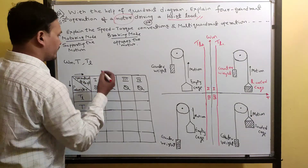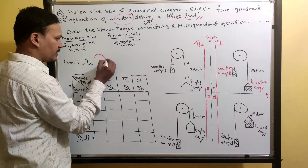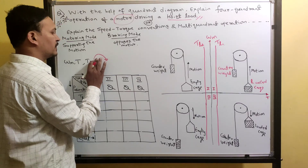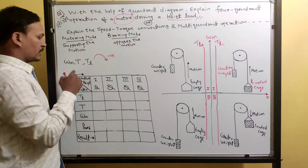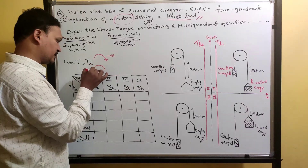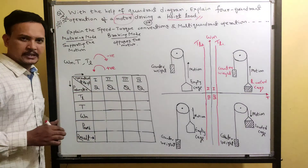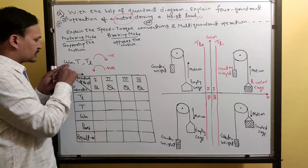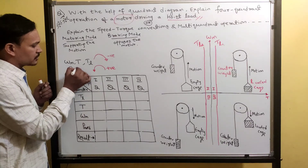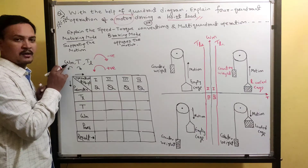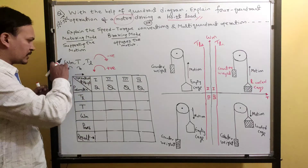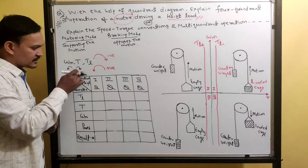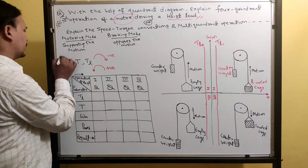Based on that, the direction changes. Our sign convention is: if any parameter is in clockwise direction, take it as negative. If any parameter is in anti-clockwise direction, take it as positive. For example, if speed is anti-clockwise and torque is clockwise, speed is positive because anti-clockwise, and torque is negative because clockwise. This is the first assumption.